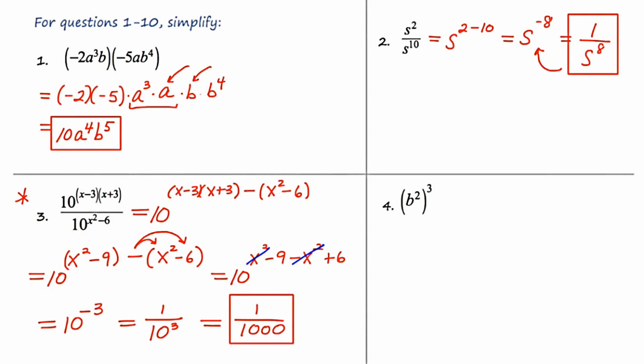Now in example 4, we're raising b squared to the power of 3. And the rule says that if you're ever raising a power to a power, you multiply the powers together. So this is going to be b to the 2 times 3 or b to the 6th power.